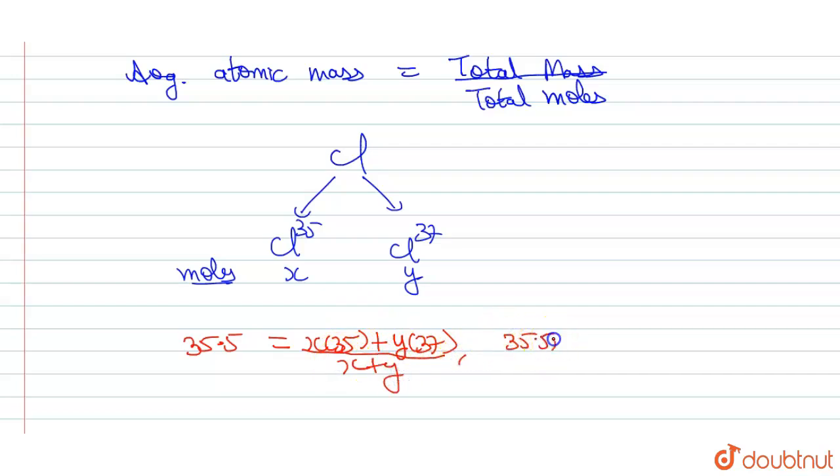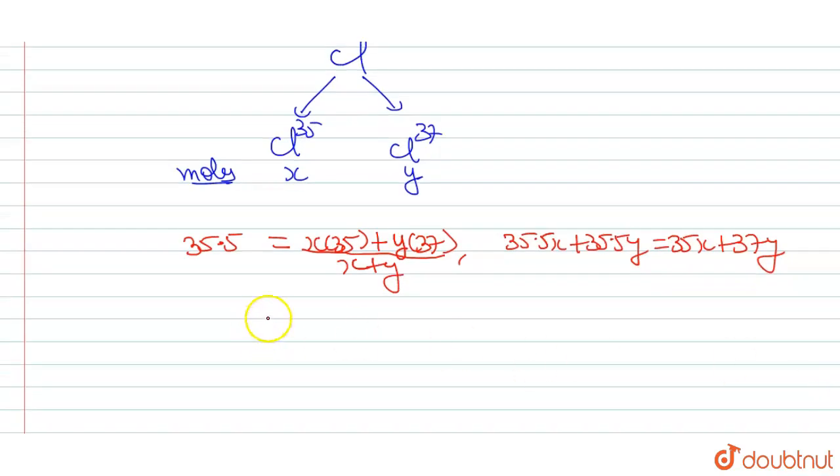35.5x plus 35.5y equals to 35x plus 37y. This will be equals to 0.5x equals to 1.5y. 37 minus 35.5 equals to 1.5, so x upon y equals to 1.5.